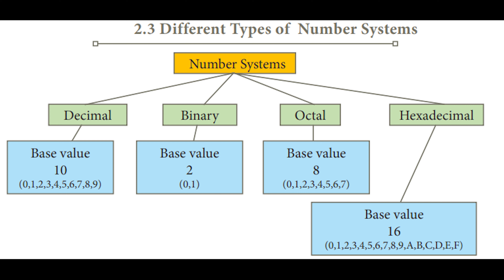Next is hexadecimal. Hexadecimal means the base value is 16. That means 0, 1, 2, 3, 4, 5, 6, 7, 8, 9 — and here, instead of 10, 11, 12 and all, we will write A, B, C, D, E, F. So here we have 16 digits. The base value of hexadecimal is 16 and the hexadecimal values are 0 to 9 and then A, B, C, D, E, F.